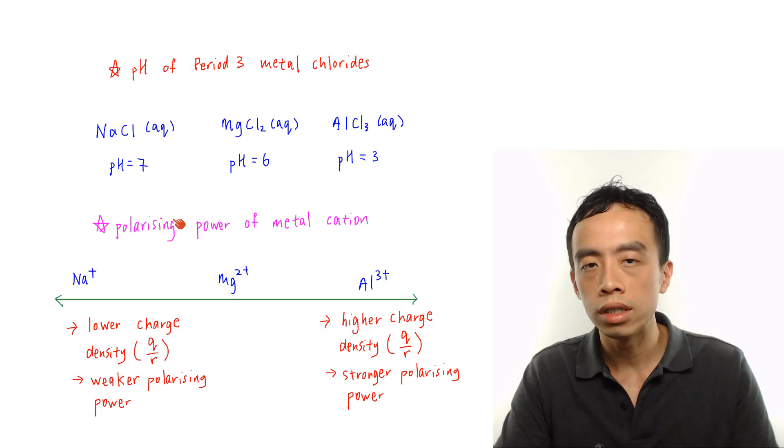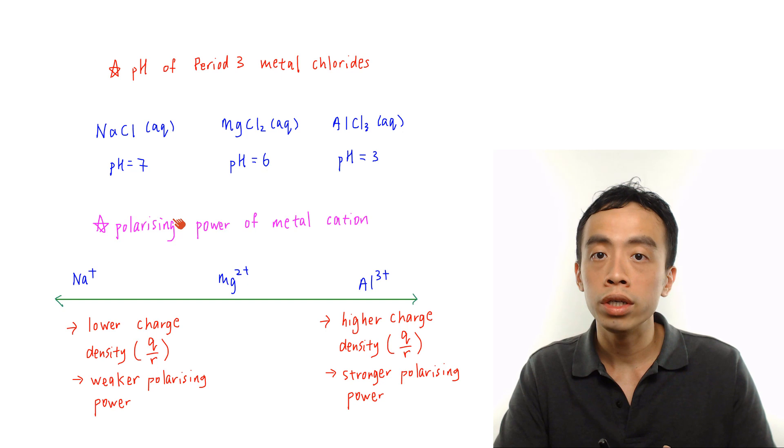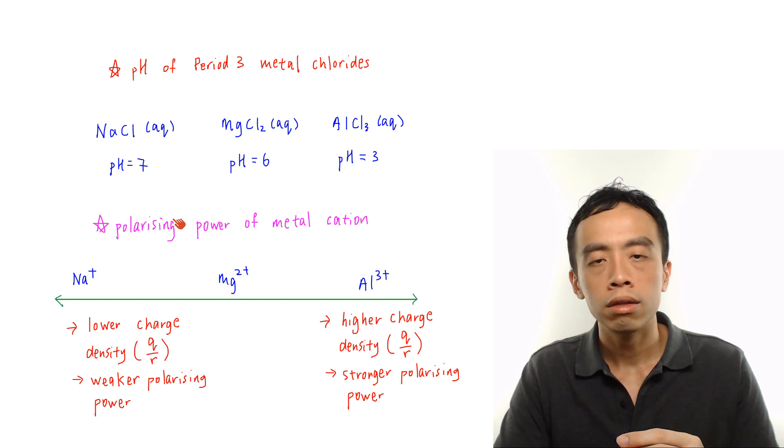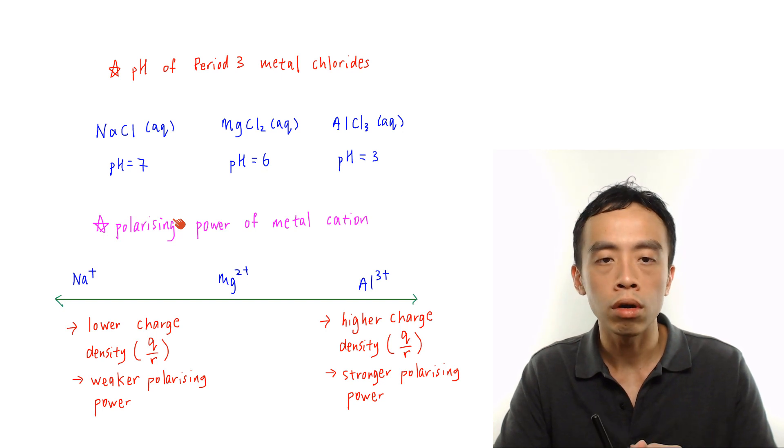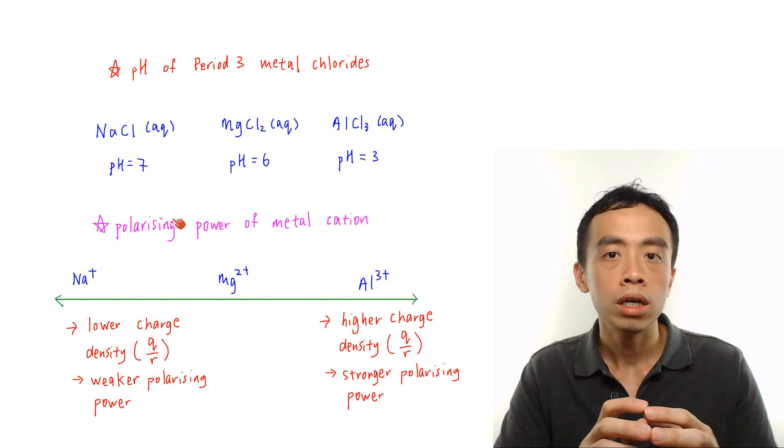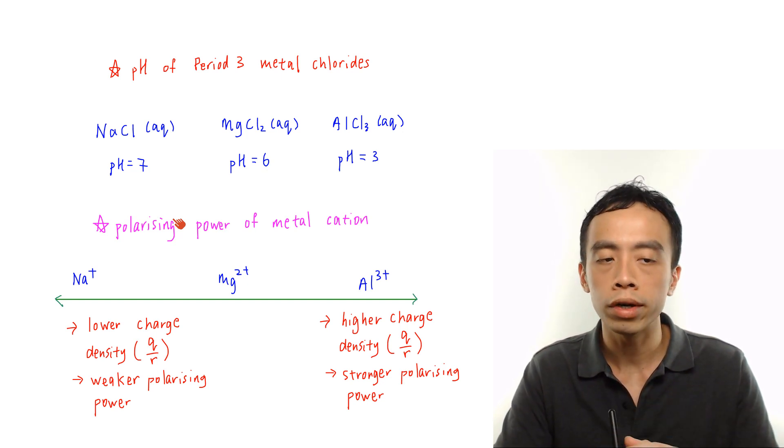Now under the topic of periodicity in inorganic chemistry, there is a discussion involving the pH of period 3 chlorides in water. Now what we want to do in this discussion is we just want to focus on the period 3 metal chlorides and there is a very interesting relationship between the pH of these 3 metal chlorides.